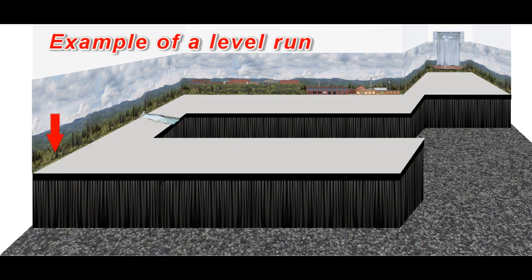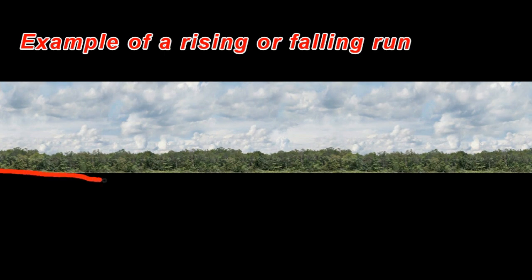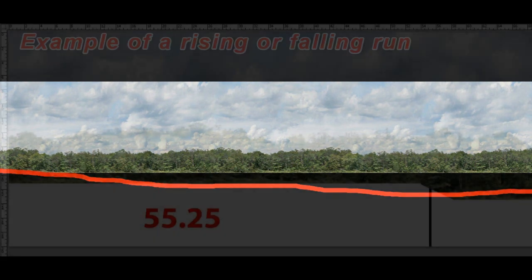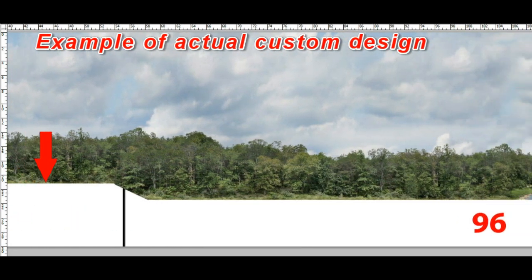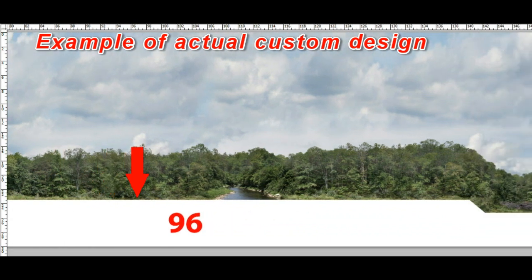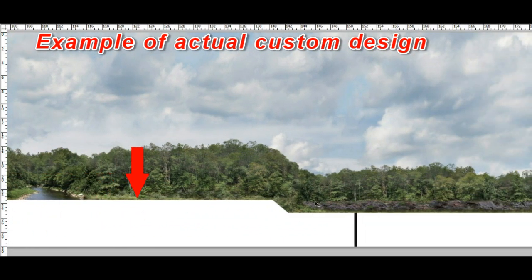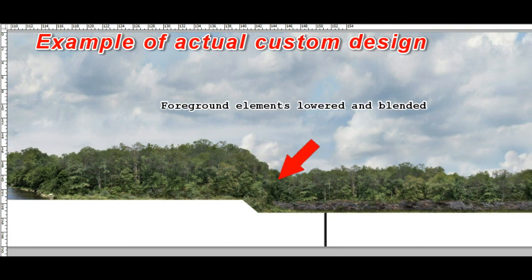Most of what we discussed thus far revolves around our standard backdrops. Many of the standard versions can be manipulated to suit the modeler where uneven terrain exists. In this example, we see a layout that has a level run for most of its right of way — it's pretty safe to say that standard style backdrops will work perfectly in this situation. There are those situations where you might have terrain that rises or falls. We can accommodate that by creating custom versions to flow with your scenery. In this illustration, we see an actual customer example of scenery and terrain that flows down and to the right.